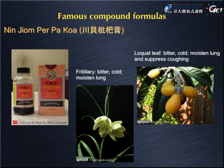Another famous compound formula is Chuan Bei Pipa Gao, used to treat sore throat. The major component is pipa — loquat — which has a cold property and can suppress coughing. Because it has a cold property, warmer components are added to balance it in this drink. It is very common and I myself have taken it, and even my kids like to drink it because it's sweet and very good for your throat and preventing coughing.